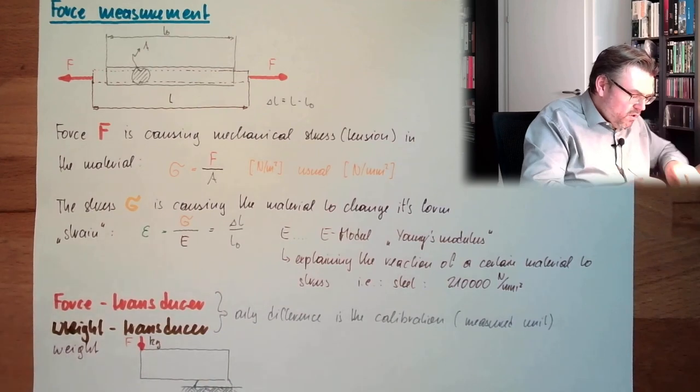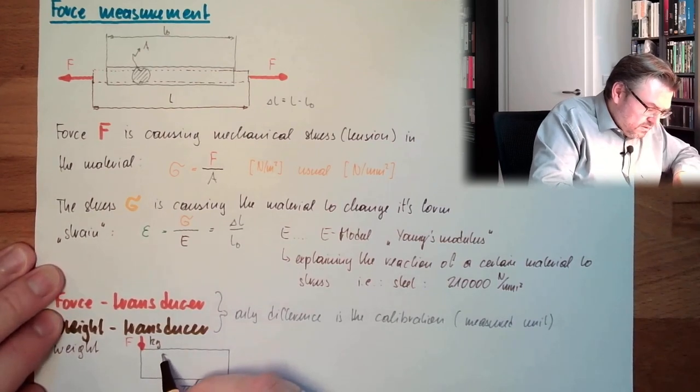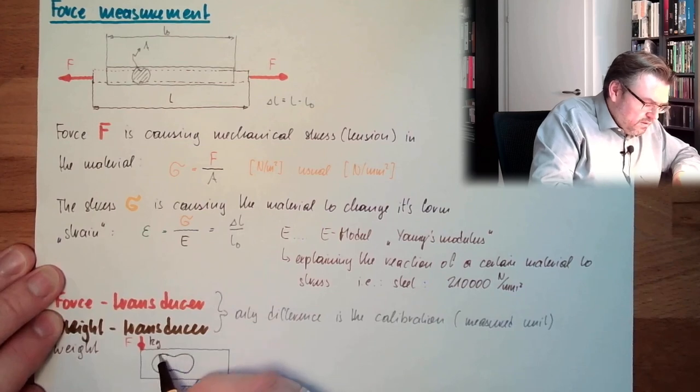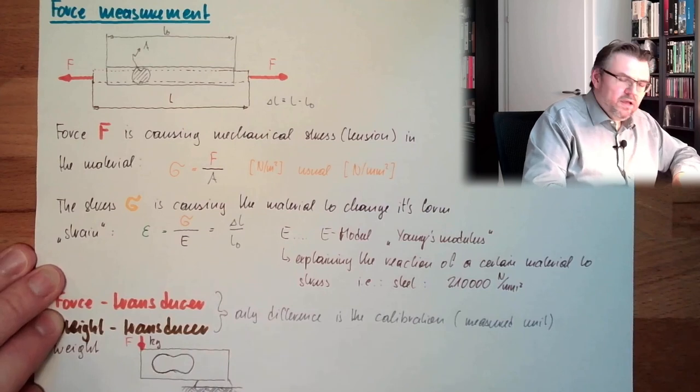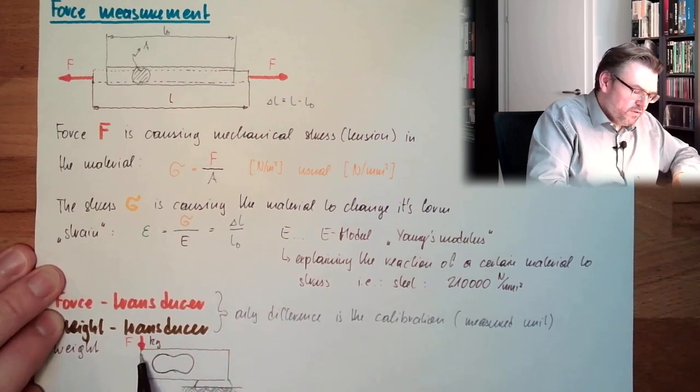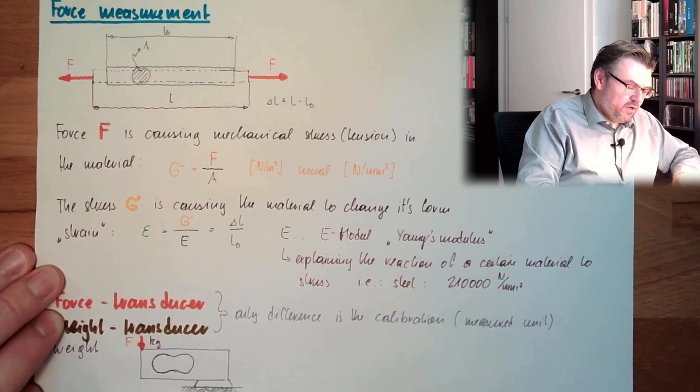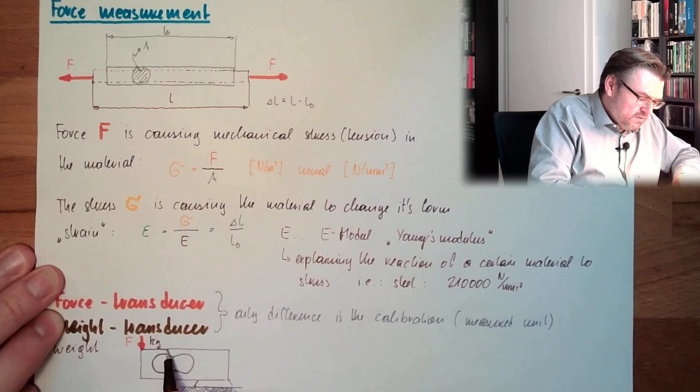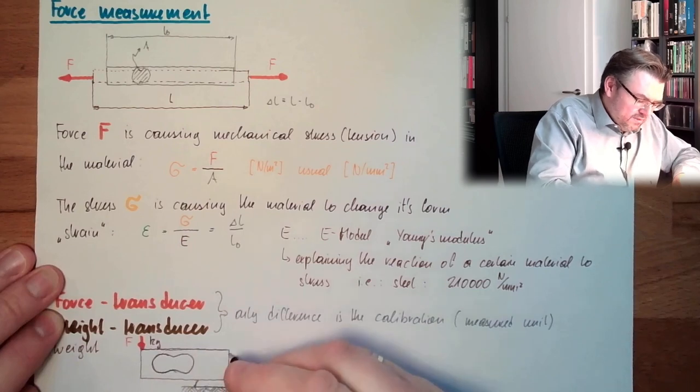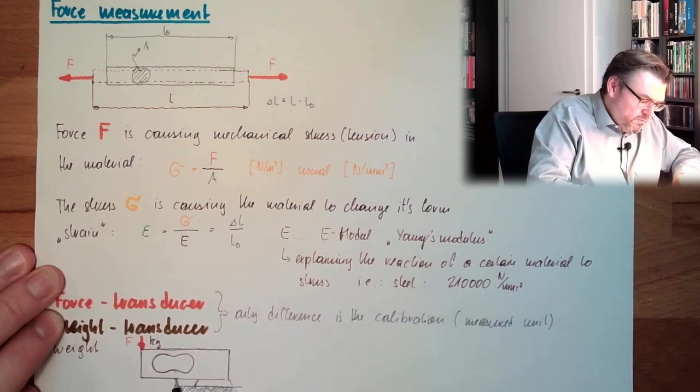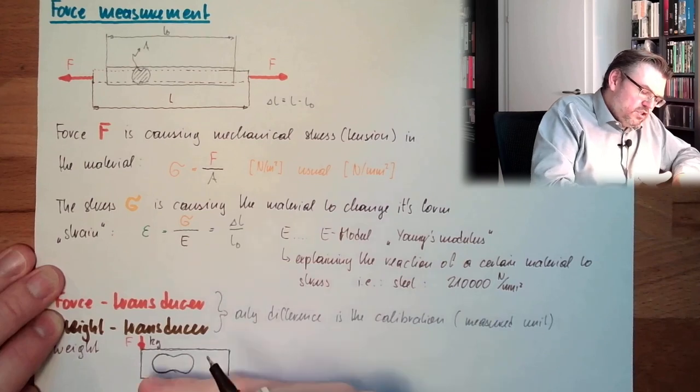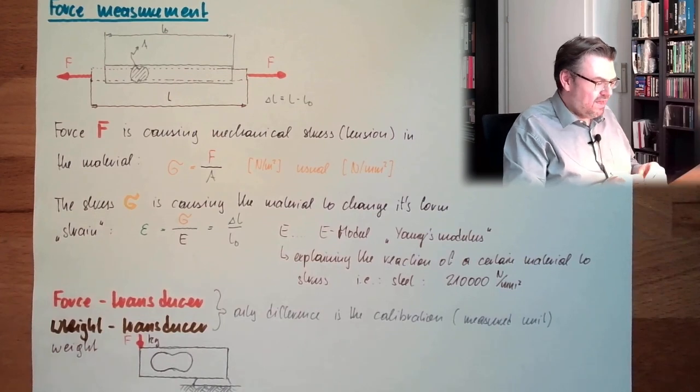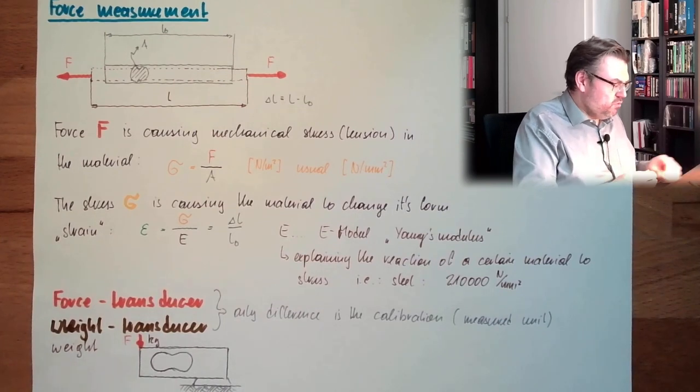And this is bending. This is changing its form. Usually we have here some special formed holes inside so that this deformation of this thing is following certain rules. And the thing we are actually measuring is the strain. So we are actually measuring the strain of this device, which will change its form under the load.